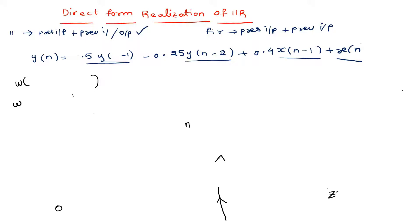There are many forms to realize IIR filters: direct form one, direct form two, cascade form. We will discuss each one by one. This video covers direct form one realization.